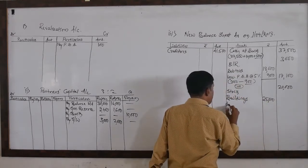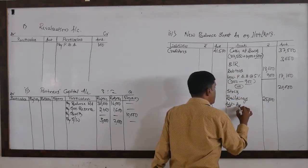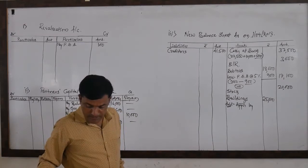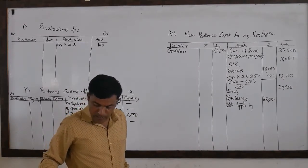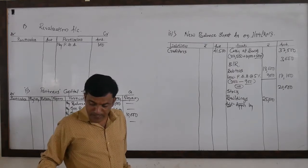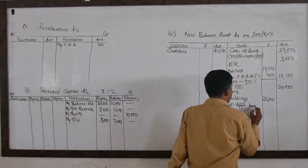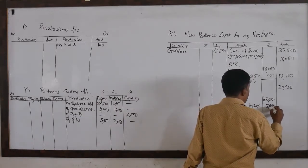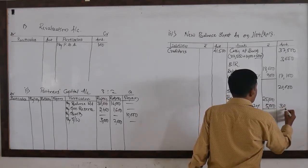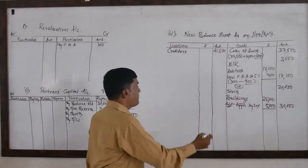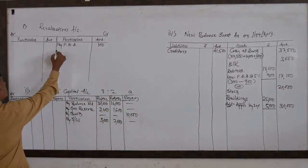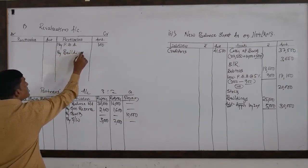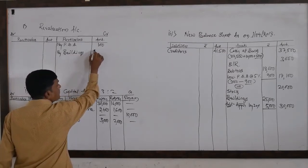Buildings of 25,000 are appreciated by 20%. So 20% of 25,000 = 5,000 appreciation. Total building value becomes 30,000. The appreciated amount of 5,000 is to be written on the credit side of the revaluation account as 'By Buildings, 5,000.'